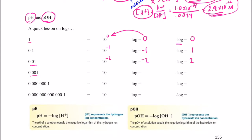0.001 — that's 10 to the negative third. So the log of that number is negative 3, and the negative of that log is 3. How about this one? 0.000001 — so that's 10 to the negative 7. So the log of that number is simply negative 7. The negative log of that number would be 7.